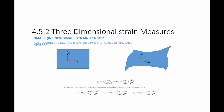The small strain tensor also gives the engineering shear strain in the planes of the basis vectors. For example, with basis vectors e₁ and e₂, after deformation the angle between them changes — the engineering shear strain γ₁₂ equals 2ε₁₂, which equals ∂u₁/∂x₂ + ∂u₂/∂x₁. Similarly, γ₁₃ equals 2ε₁₃, which equals ∂u₁/∂x₃ + ∂u₃/∂x₁. Always remember: the engineering shear strain equals 2 times the shear strain component defined in the small strain tensor.